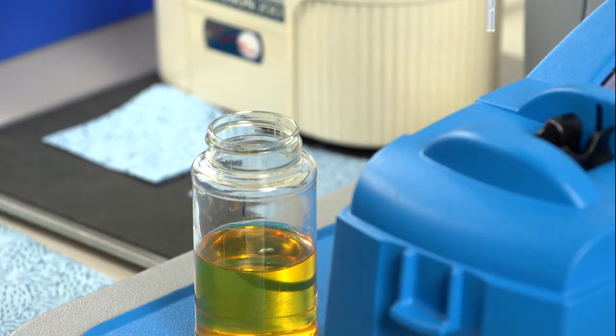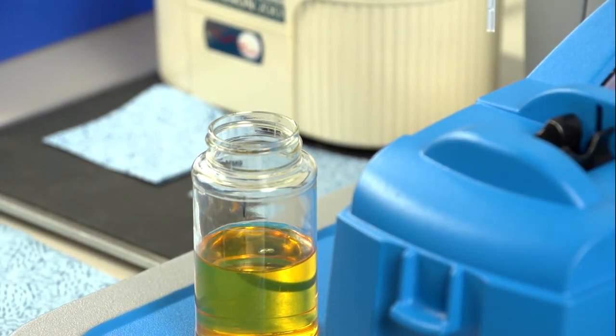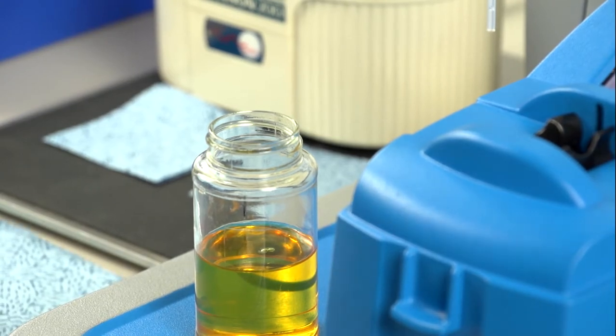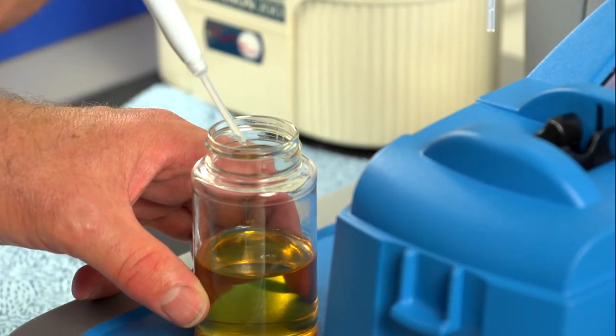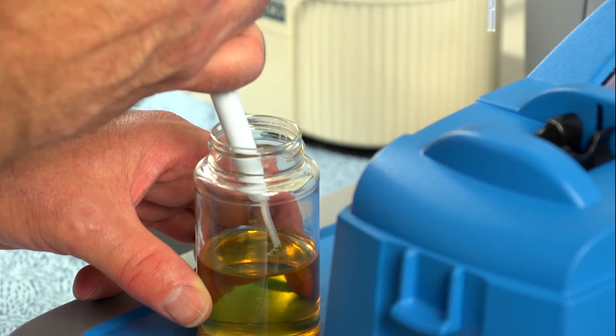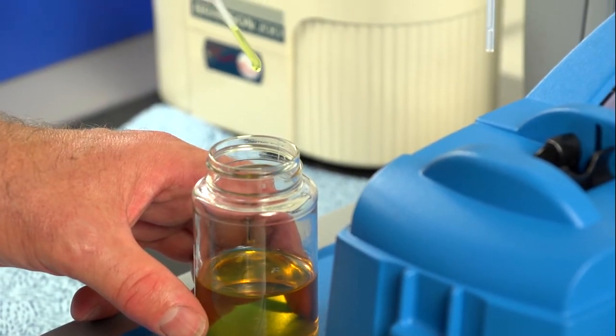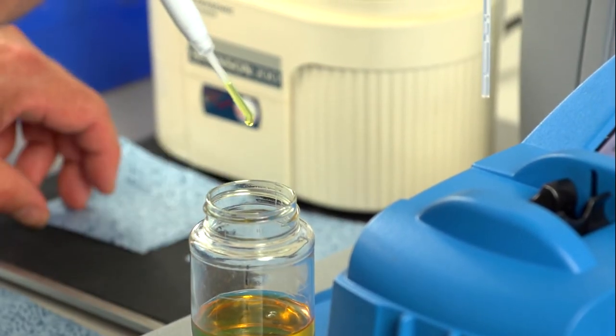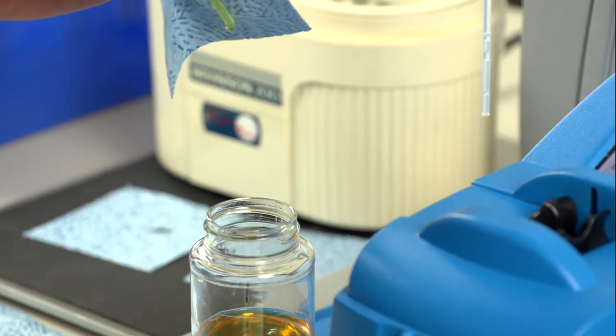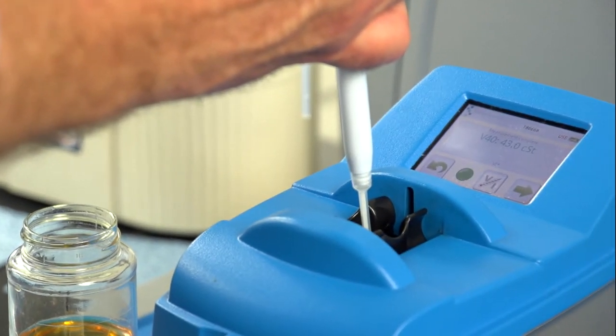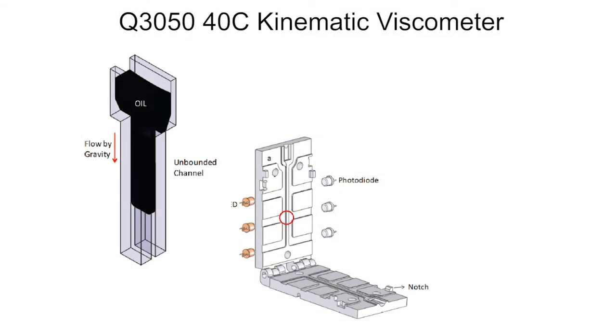The MiniLab 53 uses a spectrovisc viscometer, which measures 40 degrees C kinematic viscosity. Simply take a single drop of oil, drop it into the viscometer. Parallel plates heated to 40°C give you a direct measurement of kinematic viscosity.